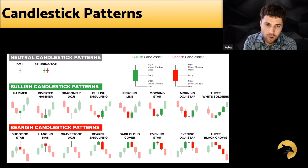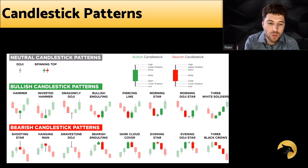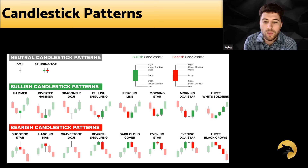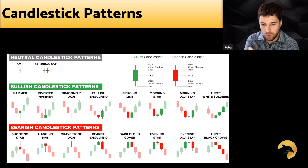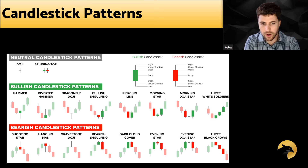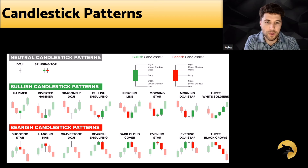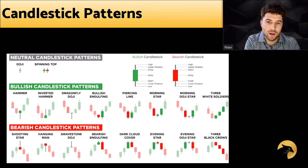Some of the ones we'll go over: the hammer, the three white soldiers — where you see three green candles in a row — and three black crows, where you see three red candles in a row. Other common ones: bearish engulfing, where the entire movement up was engulfed by a movement downward. Dojis are very powerful too, where you see a symmetry of the body and lower and upper shadow, indicative of indecision in the market. The candlestick that follows can give clarity for the direction.